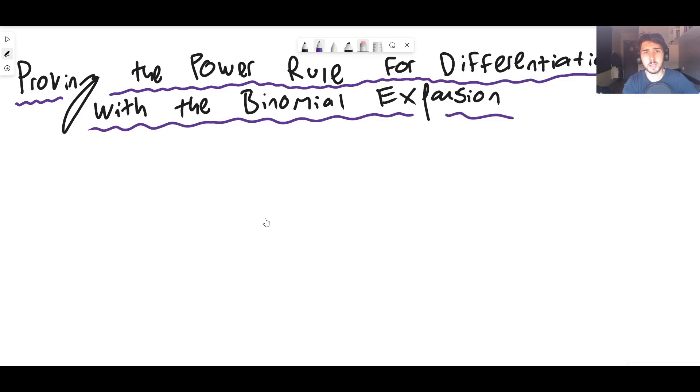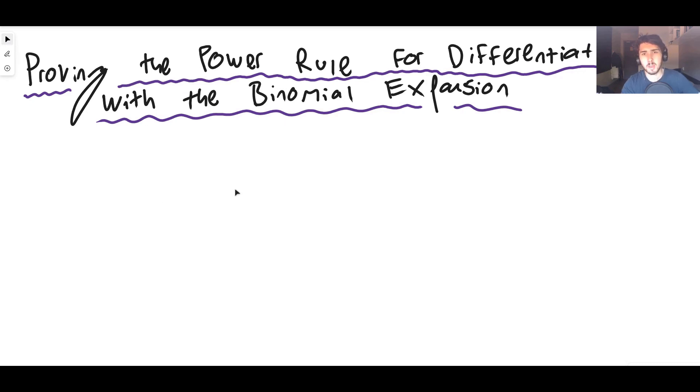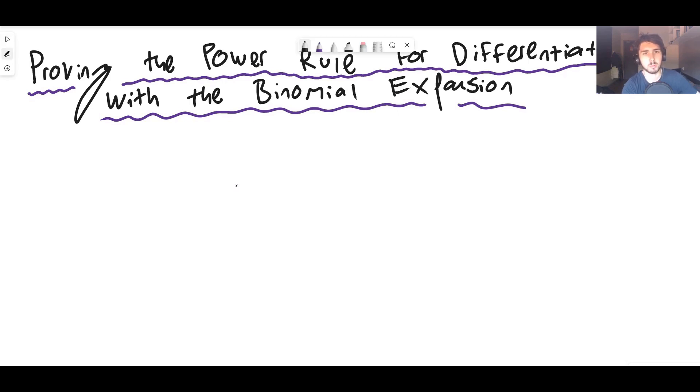The proof that we're going to do today though only works for when n is a natural number, i.e. n is 1, 2, 3, 4, 5, 6, 7, 8, 9, 10, 11, etc. going on forever. If you want a proof for all real numbers, the link is in the description, but let's get straight into it.